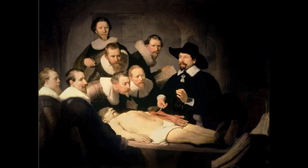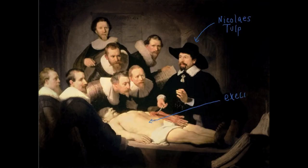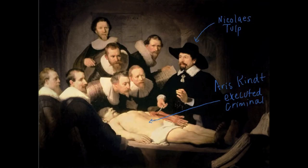We can identify a couple of characters right away. The man giving the lesson must be Nicholas Tulp, and the man on the table being studied must be some sort of executed criminal, since those were the only types of bodies permitted for these types of experiments. In this case, the man's name is Aris Kint, though his real name is much more difficult to pronounce, and he was recently hanged for endangering the life of a man whose cloak he attempted to steal.